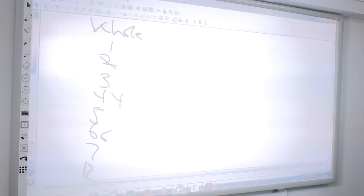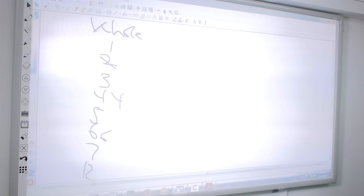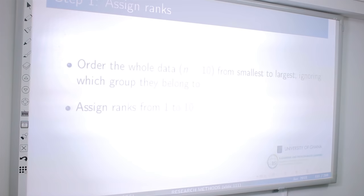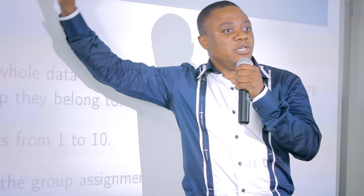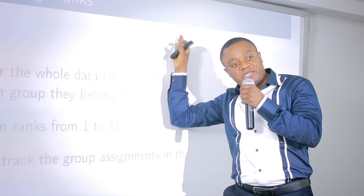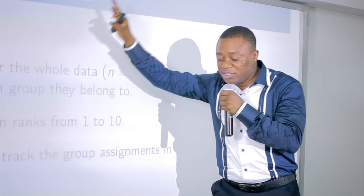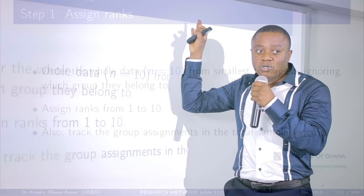The next step is to assign ranks from 1 to 10 — one to ten because the total sample size is ten. Crucially, while assigning ranks, track which group each value belongs to — new drug or placebo. So value one gets rank 1; if it came from the new drug group, it goes under new drug.